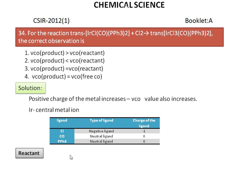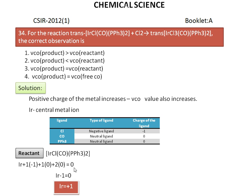First we calculate for the reactant. The reactant molecule is Vaska's complex. In this case: iridium + one chlorine (charge −1) + one carbonyl (charge 0) + two triphenylphosphines (2 × charge 0) = charge of the complex. We get the charge of iridium as +1.